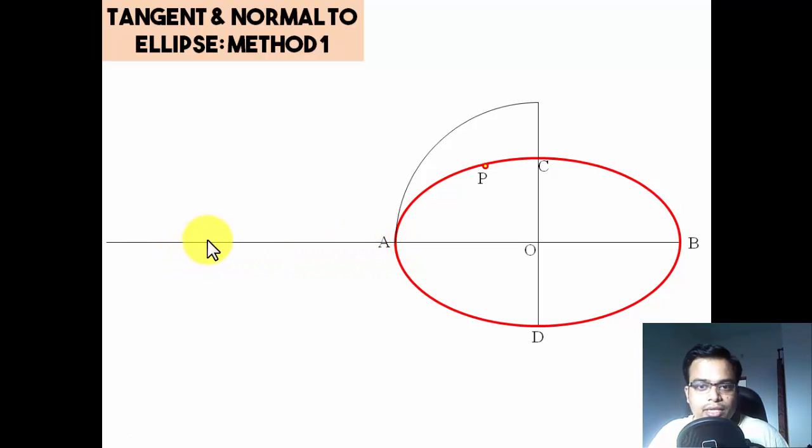Now we're going to make a line absolutely parallel to this minor axis from point P, something like this, until it intersects this circle circumference somewhere here. Let us say this point is Q.